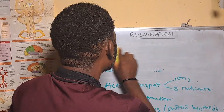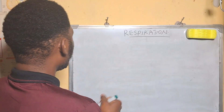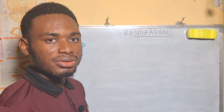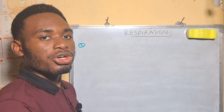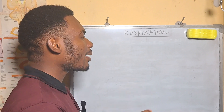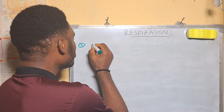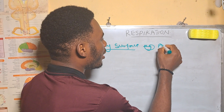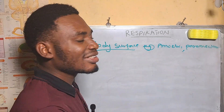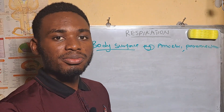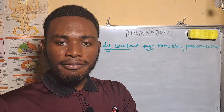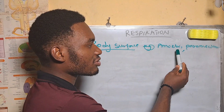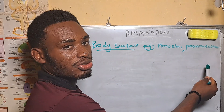Now let's discuss external respiration in specific organisms. In unicellular organisms such as amoeba and paramecium, they use their body surface to respire. Oxygen from the exterior — at high concentration — diffuses into the cell interior of these cells.